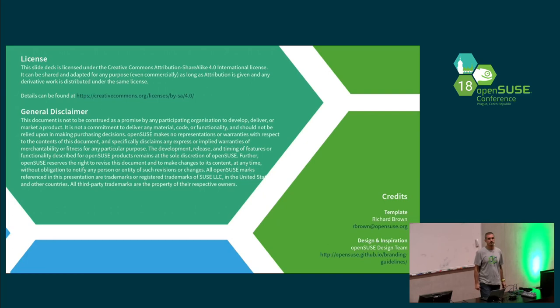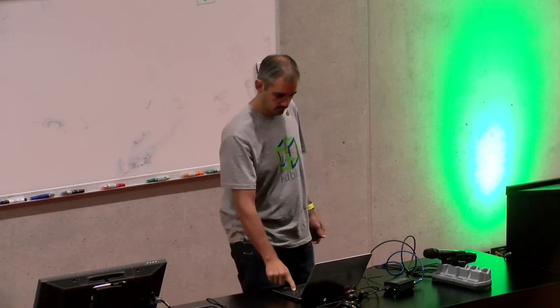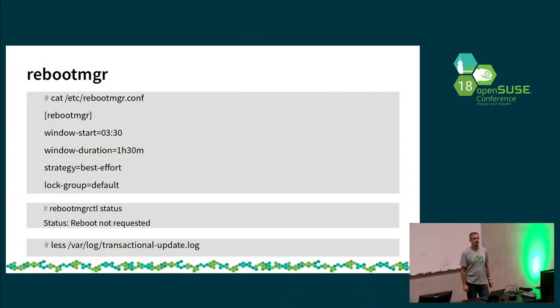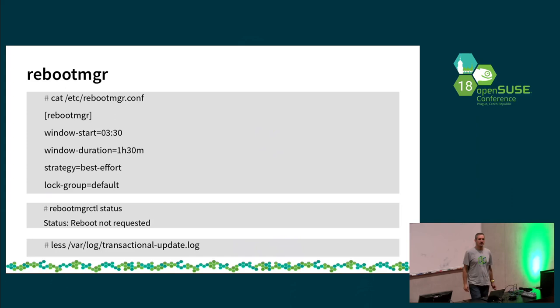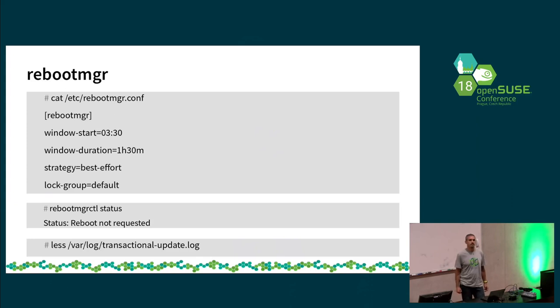Q: When you have a reboot scheduled because packages were updated, and then you run 'transactional-update package install something' creating a new snapshot, and when you reboot — do you reboot into a snapshot where the updated packages are not included? A: No, the packages are in. That's why I showed the reboot-manager status — if a reboot is scheduled, I would not install packages, I would first reboot. The safe option is to reboot your system before starting to install packages. Transactional update now gives a message when it's going to discard a snapshot because there are unapplied changes, so you're at least aware when doing it interactively.